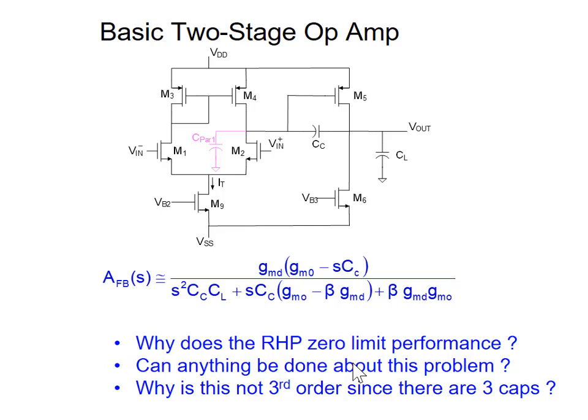Why is this not a third-order system? If you look at what we started with, we had two parasitic poles. Then we looked at initially compensating with a big capacitor from here to ground. That capacitor was in parallel with the parasitic capacitance on the first stage, so we still had two capacitors. Now we put in a third capacitor — three energy storage elements. But when we analyzed it and calculated the transfer function, we found it was second order.